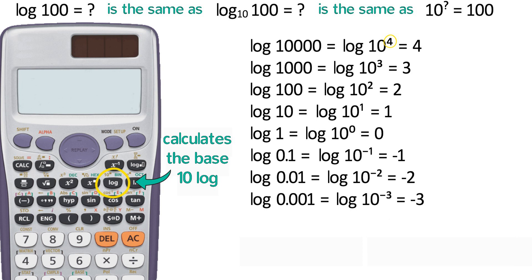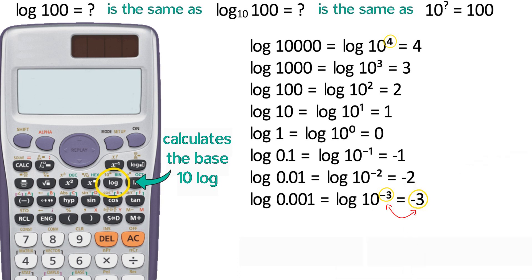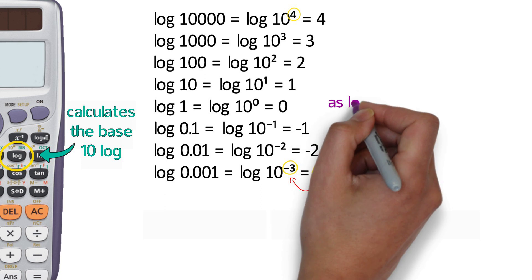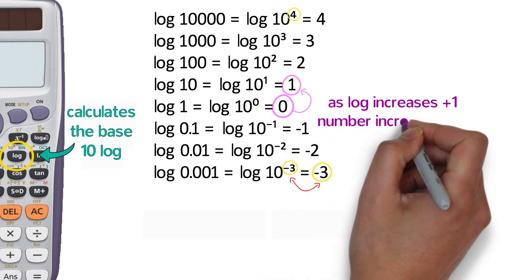We can start to see a predictable pattern here. The scientific notation exponent tells you the value of the log. In addition, notice how as the logs increase by 1, the number itself is 10 times larger.